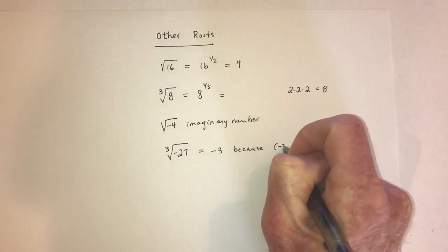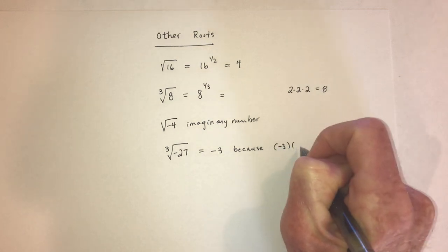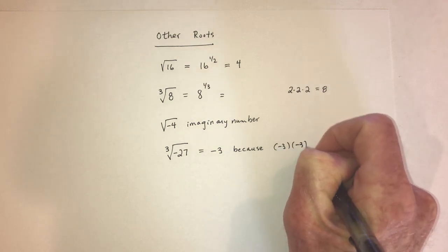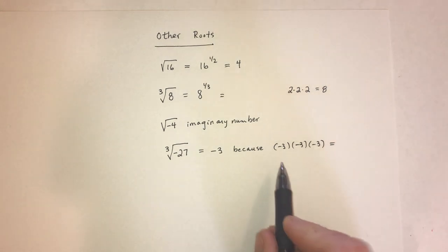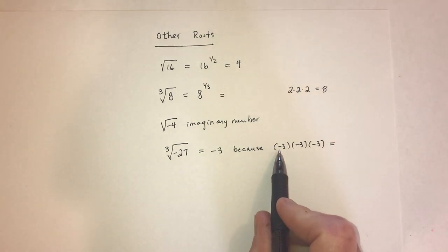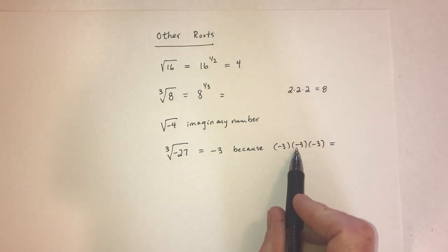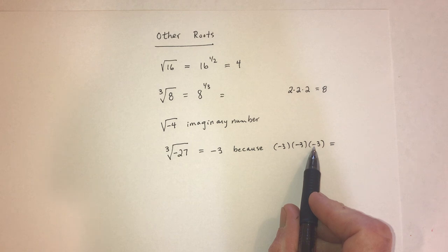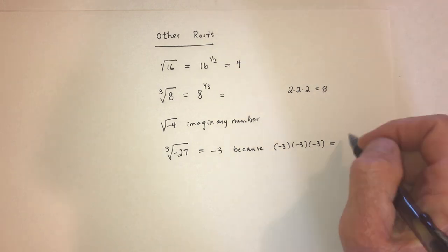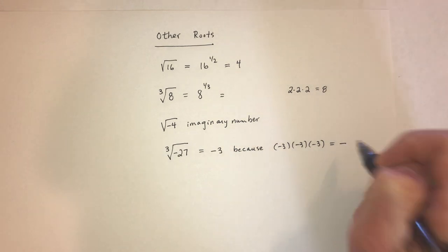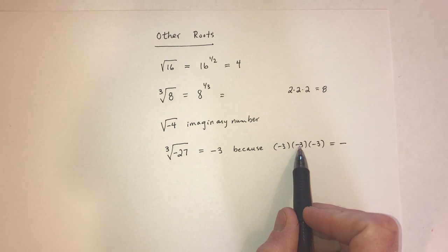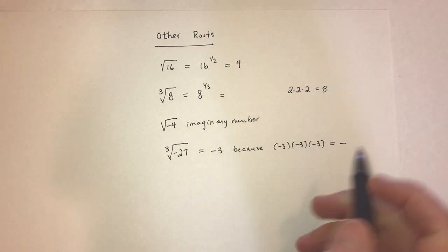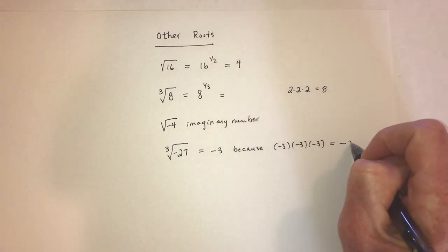The reason is: if you take negative 3 times negative 3 times negative 3 — the first two negatives cancel each other out, leaving the third negative as the survivor. Then 3 times 3 is 9, and 9 times 3 is 27, so the result is negative 27.